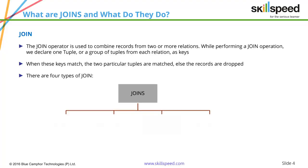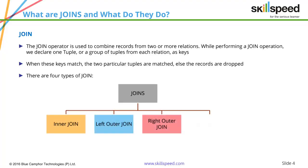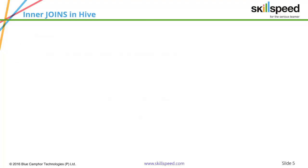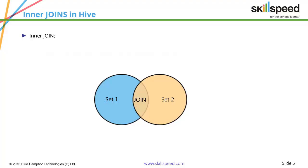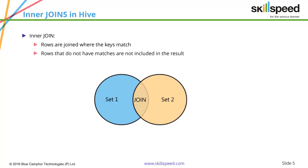There are four types of joins: inner join, left outer join, right outer join, and full outer join. In an inner join, the process compares both data sets on the common column, and wherever it finds a match, the results are displayed. Wherever it cannot find common entries in the common columns in both data sets, the results are not displayed. So rows that do not have matches are not included, and rows which have matches are shown. Inner join is the default join operation in Hive.